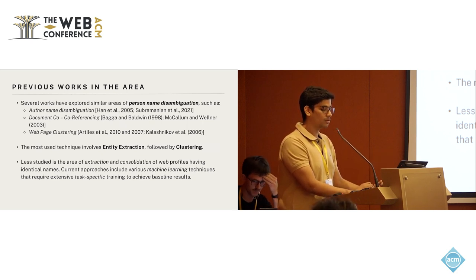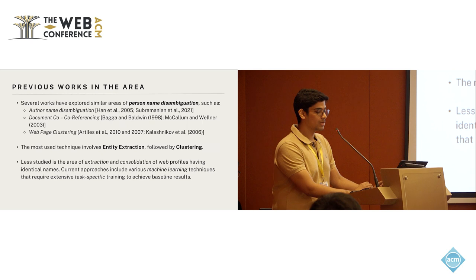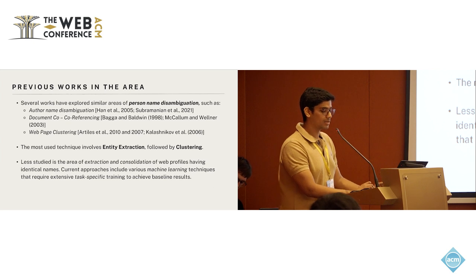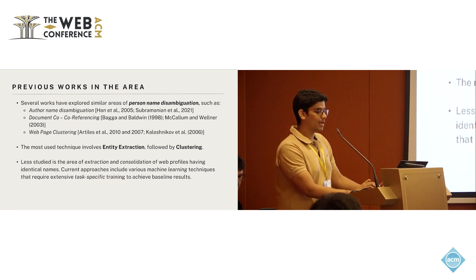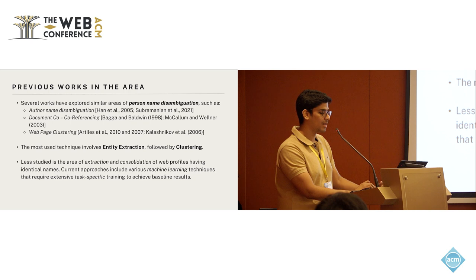Another related problem is document co-referencing, which is the task of identifying whether two documents are talking about the same person or two different individuals. Lastly, web page clustering is similar to person name disambiguation — the task involves grouping all the web pages that correspond to a particular real-world individual. Most techniques extract various types of information such as attributes, hyperlinks, and names using different machine learning models, then cluster them to identify relations between documents.